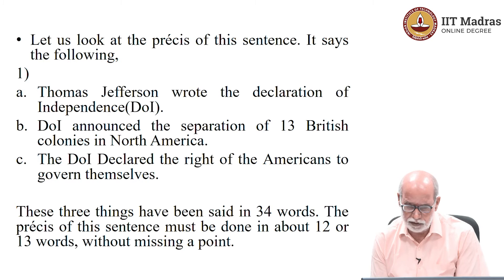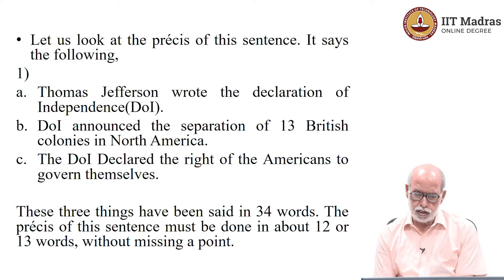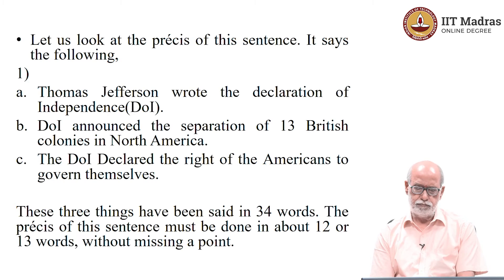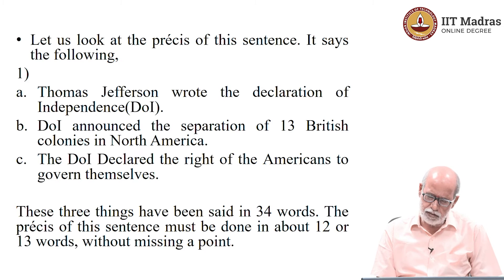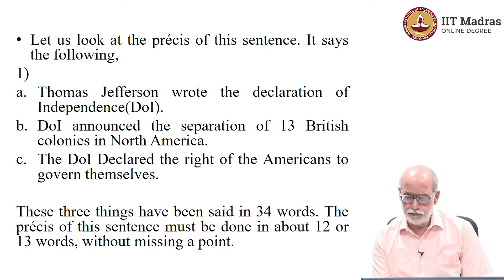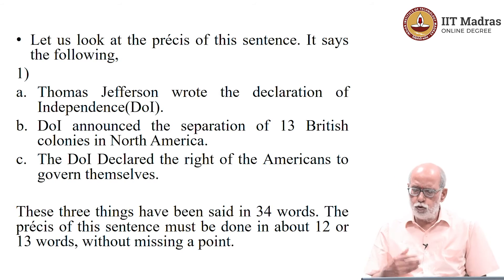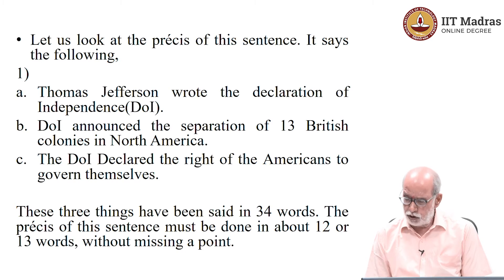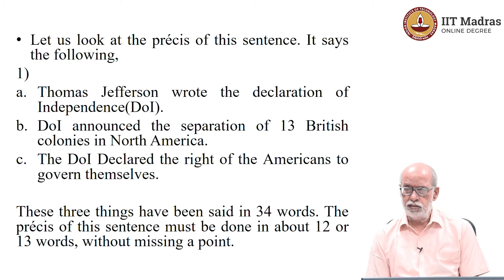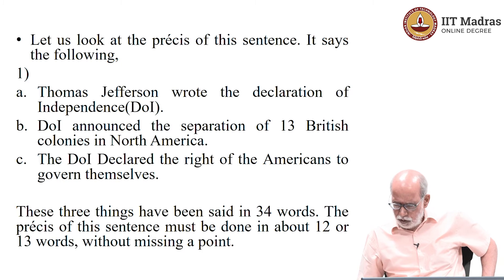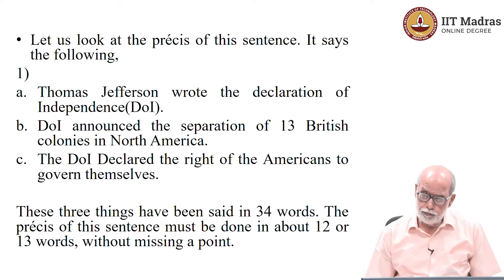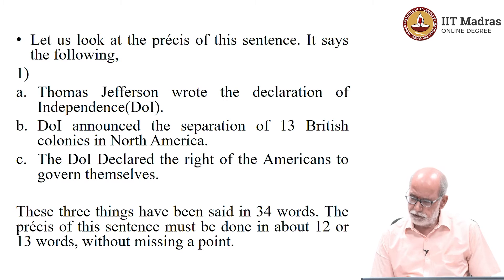What has been said in this small paragraph so that we can write its précis? The first rule of précis writing is: look at the given passage carefully and then make a point-wise list of the important things that have been said in the passage. If you can do that with justice — without missing anything that is important and without taking anything that is unimportant — that discrimination is key. You have to develop this skill, this knack of identifying the important from the not so important.